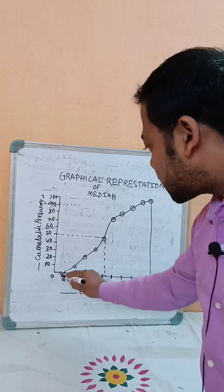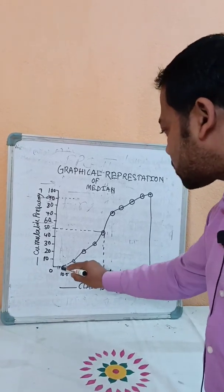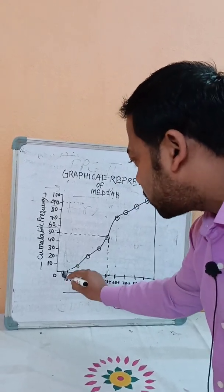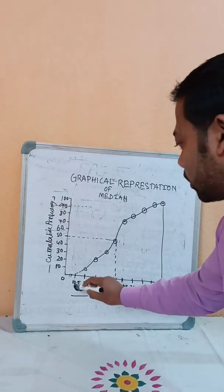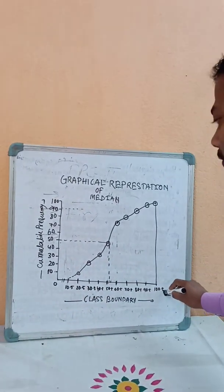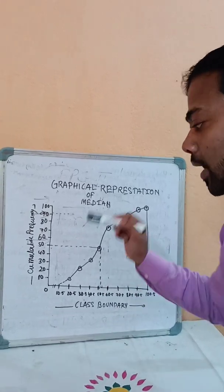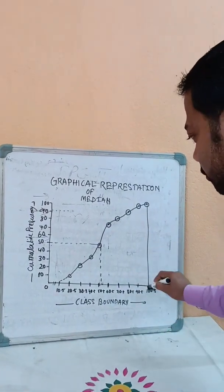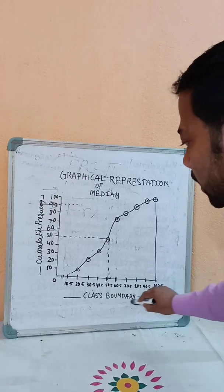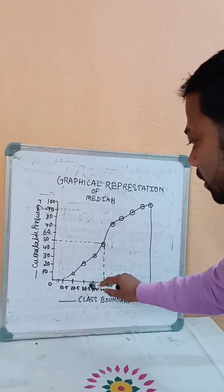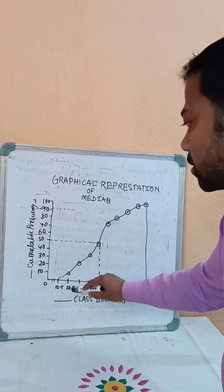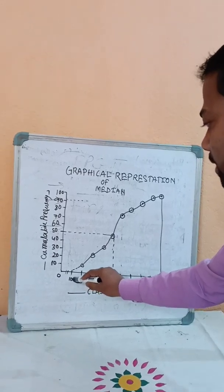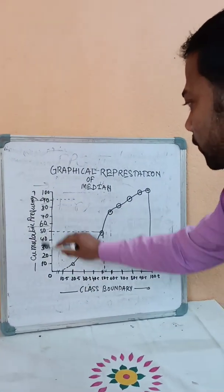If you see the graph, you can see which value corresponds to 100.5 on the class boundary axis. The class boundary is the independent variable on the x-axis, and the cumulative frequency is the dependent variable on the y-axis. According to each class boundary, we plot the cumulative frequency.